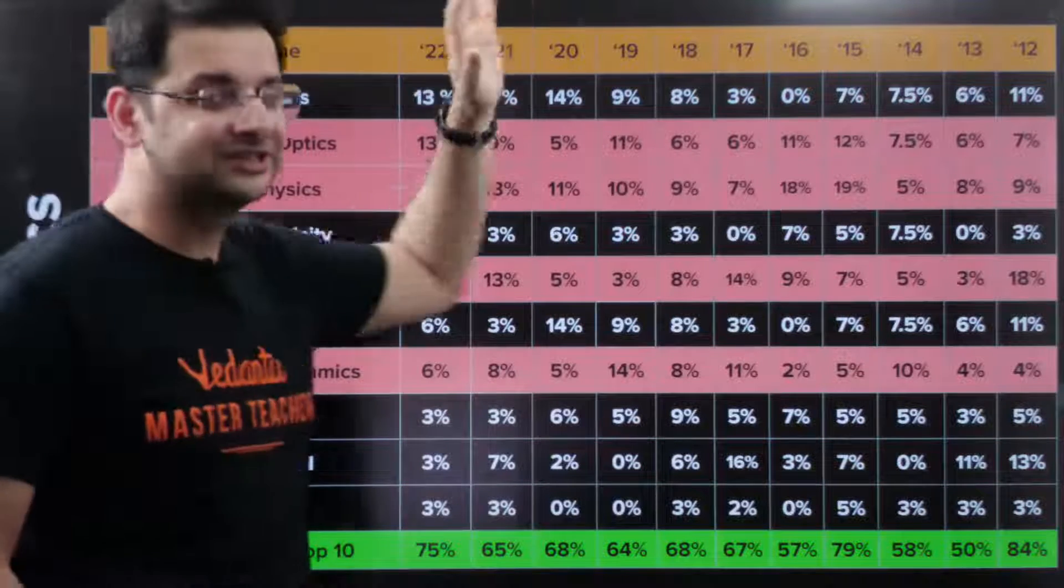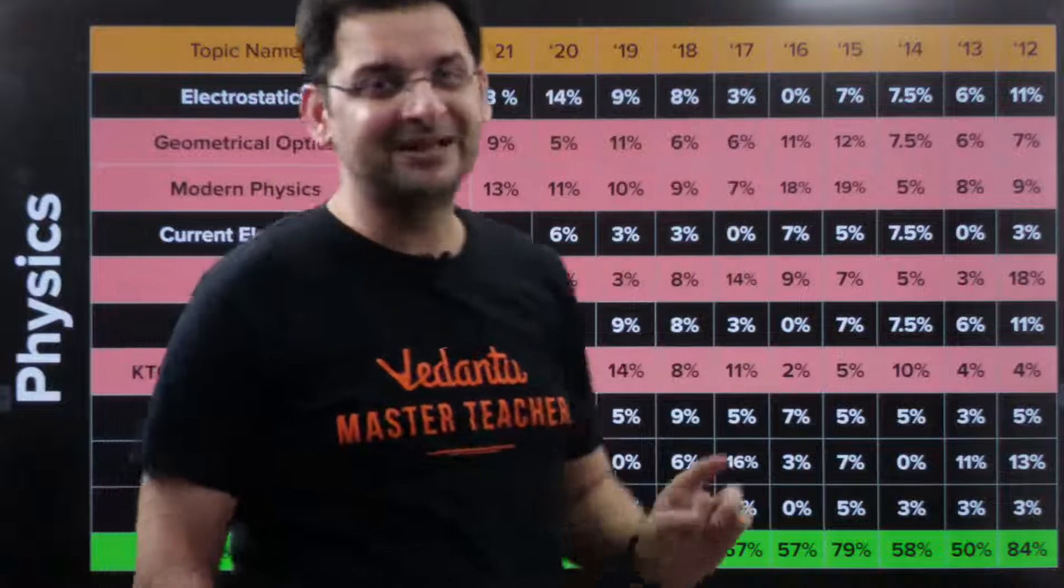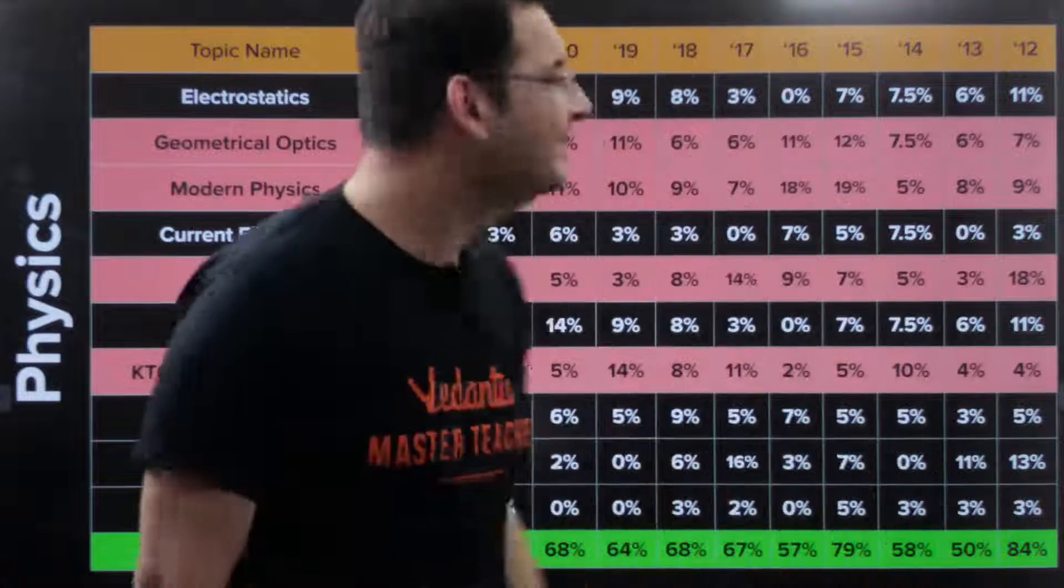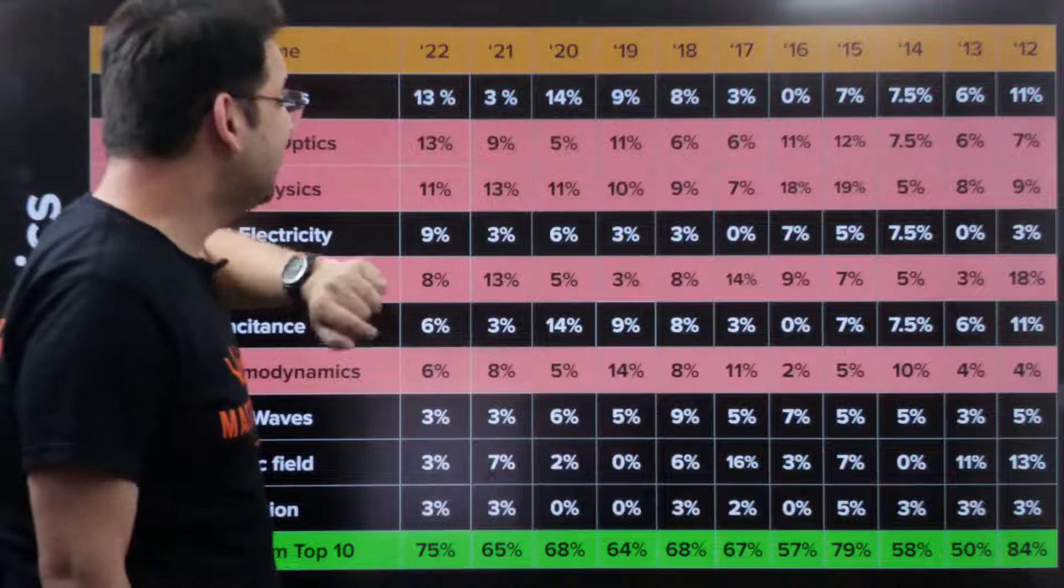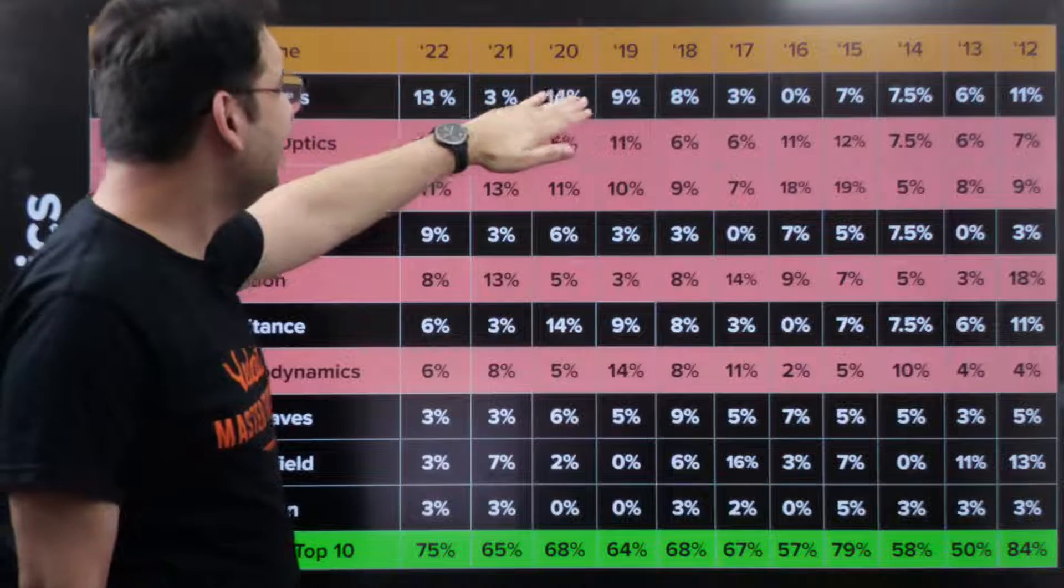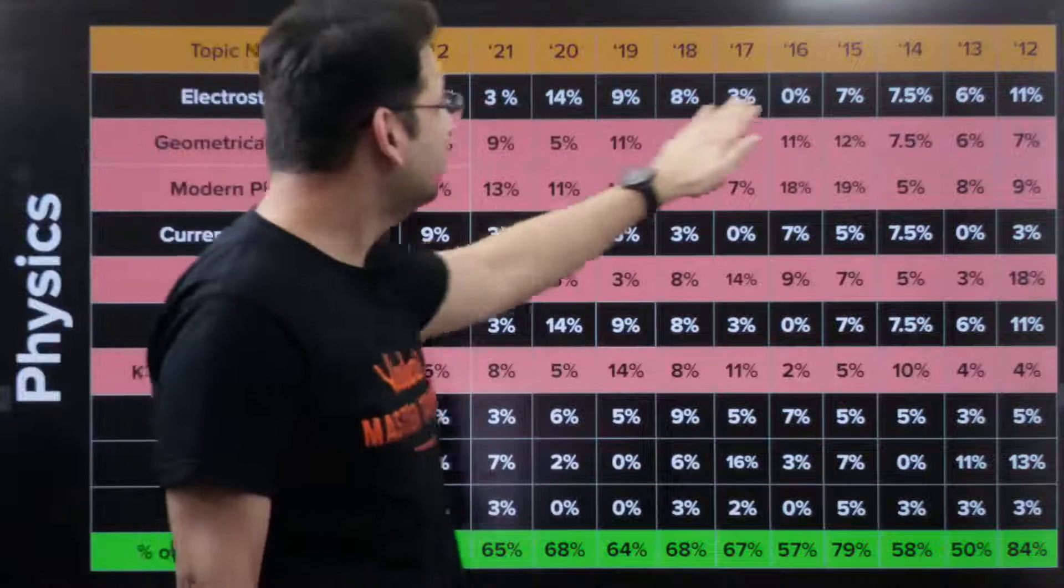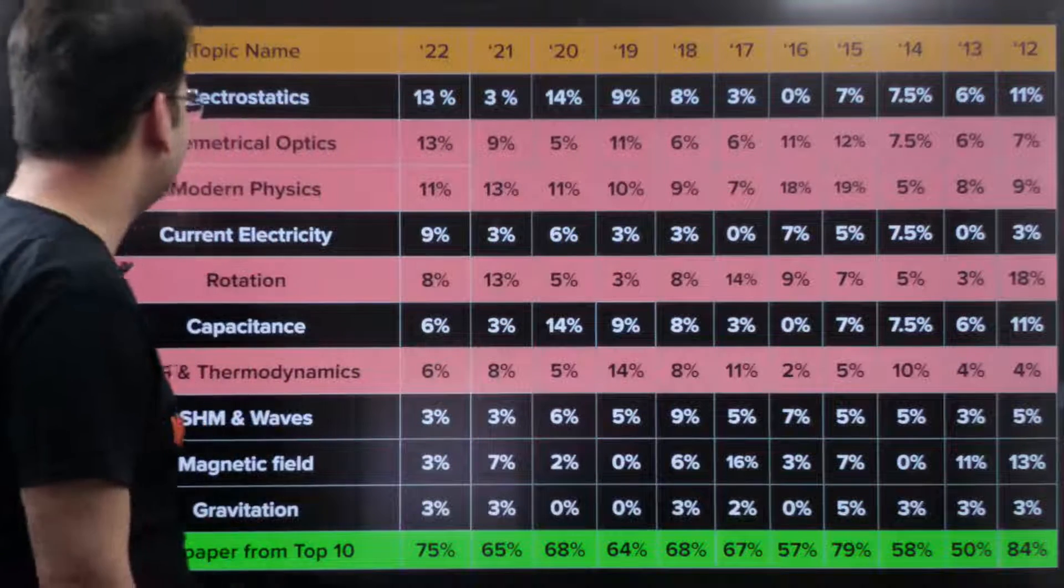Electrostatics, the most important chapter. The first chapter that we cover in class 12th. Normally, 13% in 2022, 3% in 2021, 14% in 2020, 9% in 2019. And mostly it has been having a good weightage over the years.